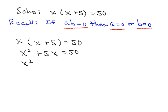Then we'll make one side zero. So we have x squared plus 5x minus 50 is equal to zero. So now the equation is in standard form.